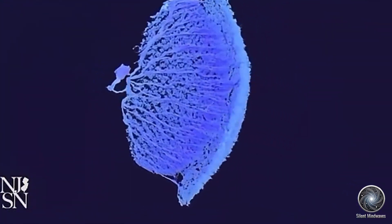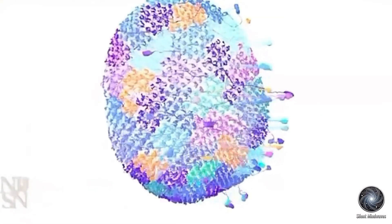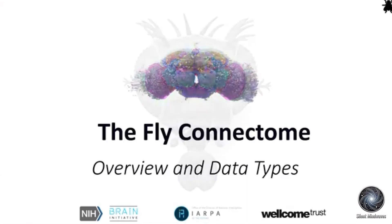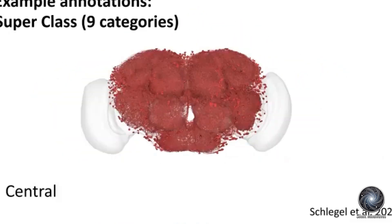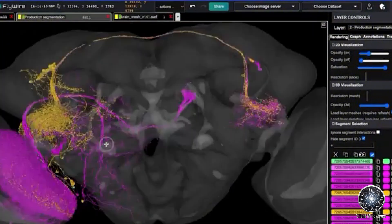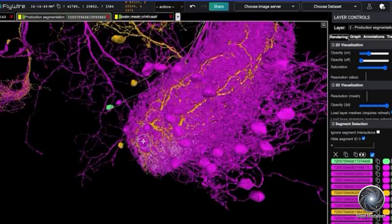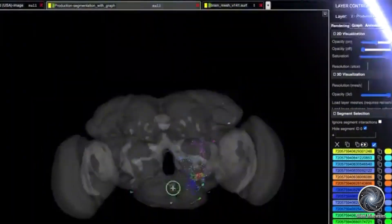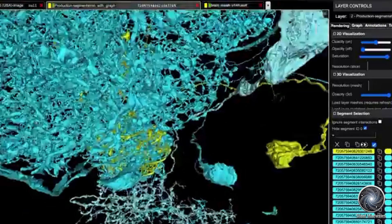Realizing the limitations of technology, the researchers launched a global initiative called Flywire, recruiting hundreds of volunteers from around the world. These volunteers, armed with AI-generated maps, manually corrected and refined the details, treating the project like an enormous three-dimensional puzzle. This global collaboration resulted in the creation of the most complete brain map of any organism ever achieved.